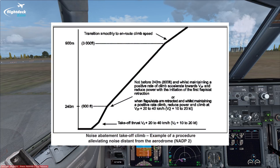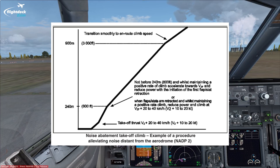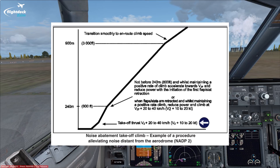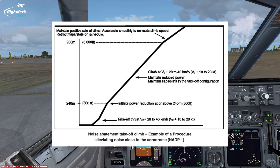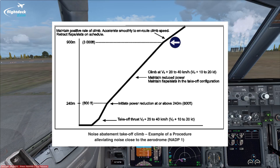By far the most common is NADP2, which helps reduce noise for people who live a little bit further away from the airport along the SID departure path. With the NADP2 departure, we take off, rotate, climb at V2 plus 10 to V2 plus 20, and then at not less than 800 feet we bug up and retract the flaps on schedule. The NADP1, which isn't as common, is very similar except we delay the bug-up speed until 3,000 feet as opposed to 800 feet, and that helps reduce noise for people who live very close to the airfield perimeter.